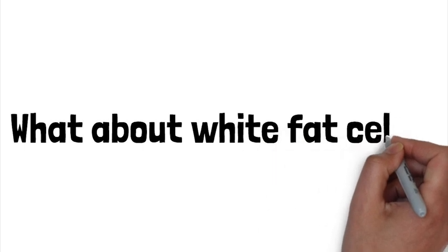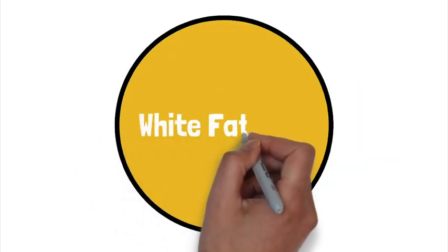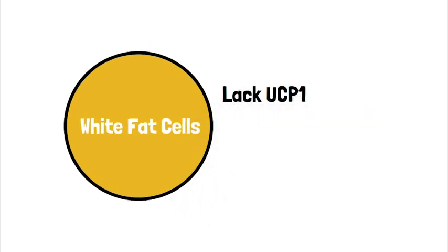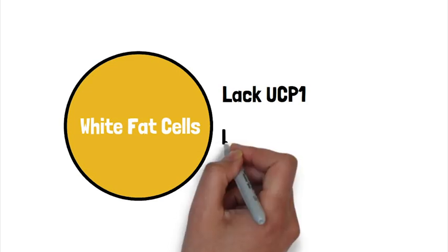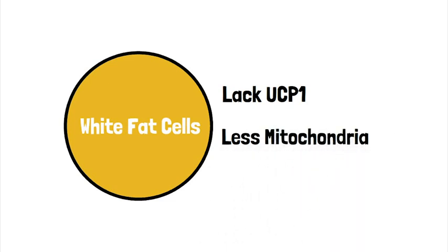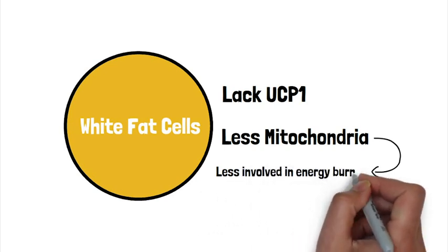So what about white fat cells? White fat cells aren't as significant in burning energy and driving metabolism because they lack UCP1 in their mitochondrial membrane, meaning they are not as efficient in burning calories. They also have less mitochondria per unit, making their contribution to burning energy negligible when compared to brown fat cells.